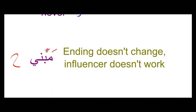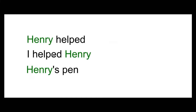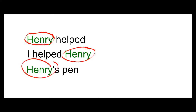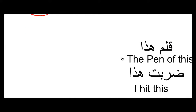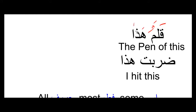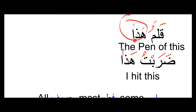The second category is mabini. In mabini, the ending doesn't change and the influencer doesn't work. In English, for example, take the word 'Henry' — 'Henry helped', 'I helped Henry', 'Henry's pen'. Unlike the masculine pronoun 'he', Henry did not change; it stayed the same. Bringing that into Arabic: 'qalamu hadha' — hadha is supposed to have two kasras, but because it's mabini, it does not change; it remains hadha. Similarly, when I say 'darabtu hadha', because it's the object of a verb it's supposed to have a fatha, but it does not — it has remained hadha as it always does. Because of that, we know this word is mabini.